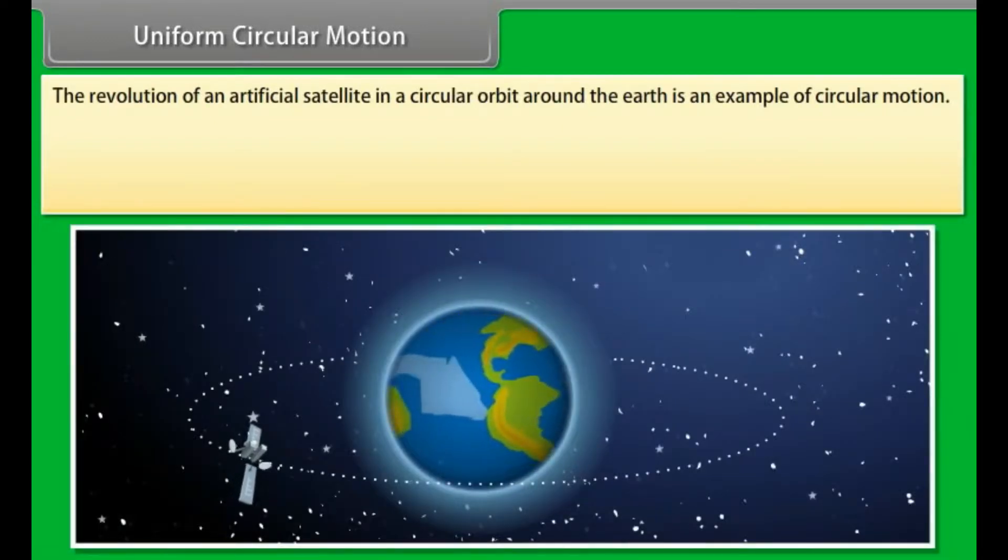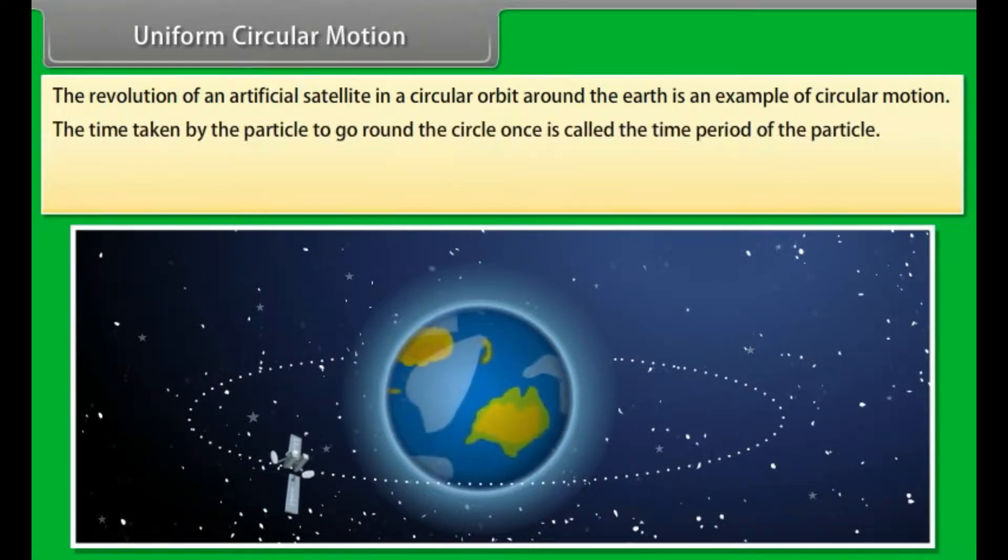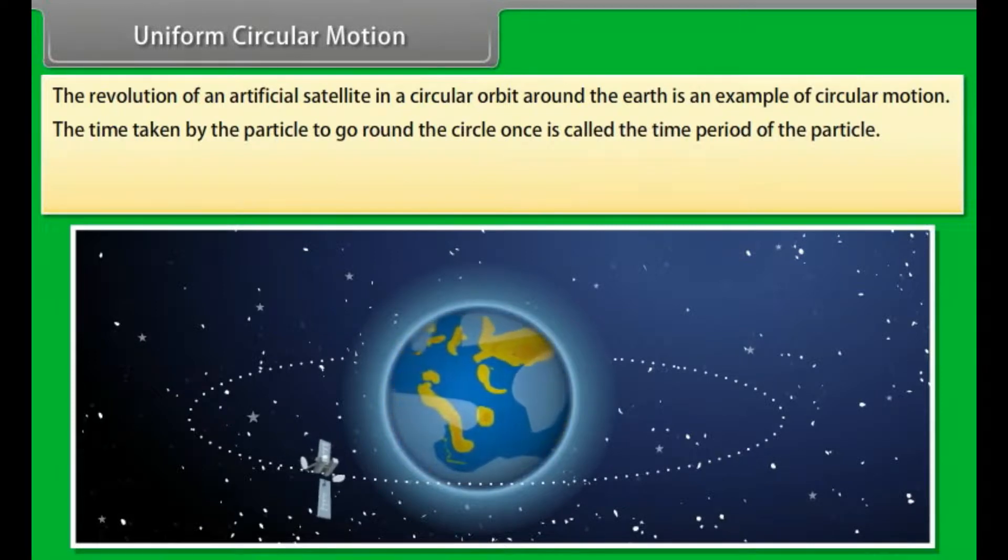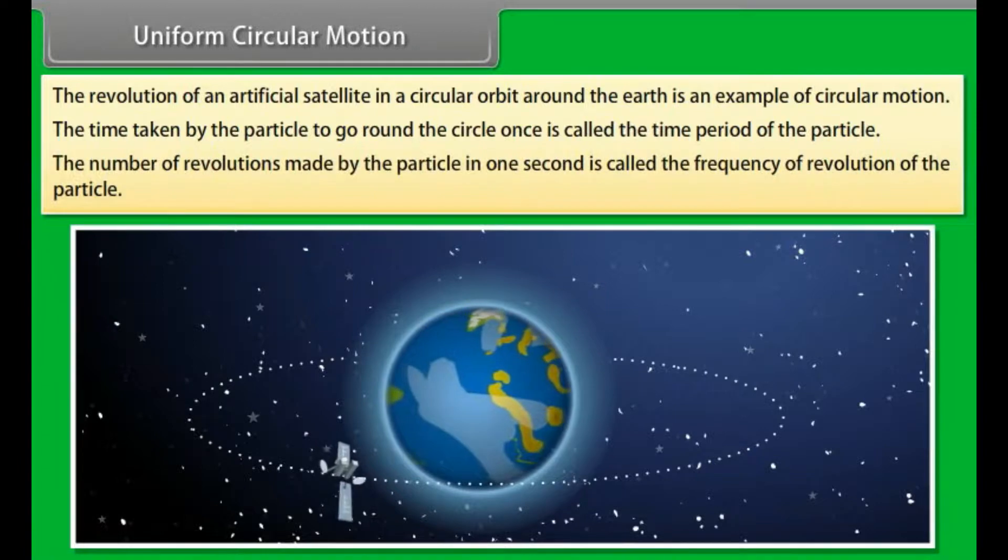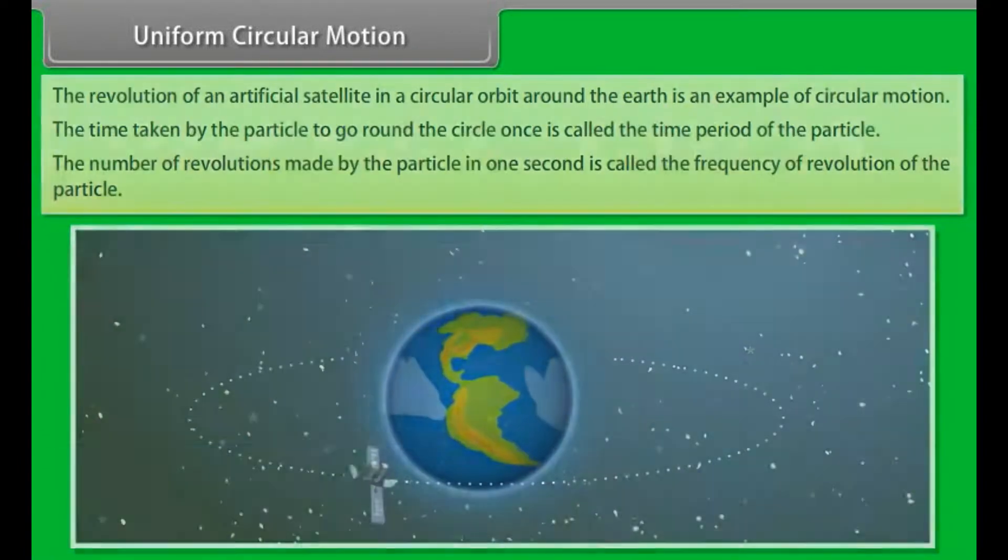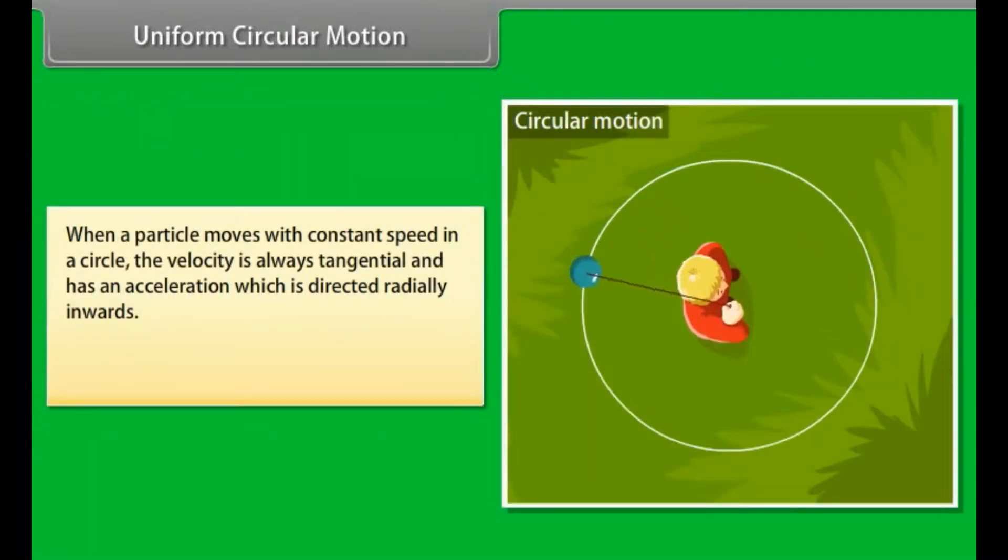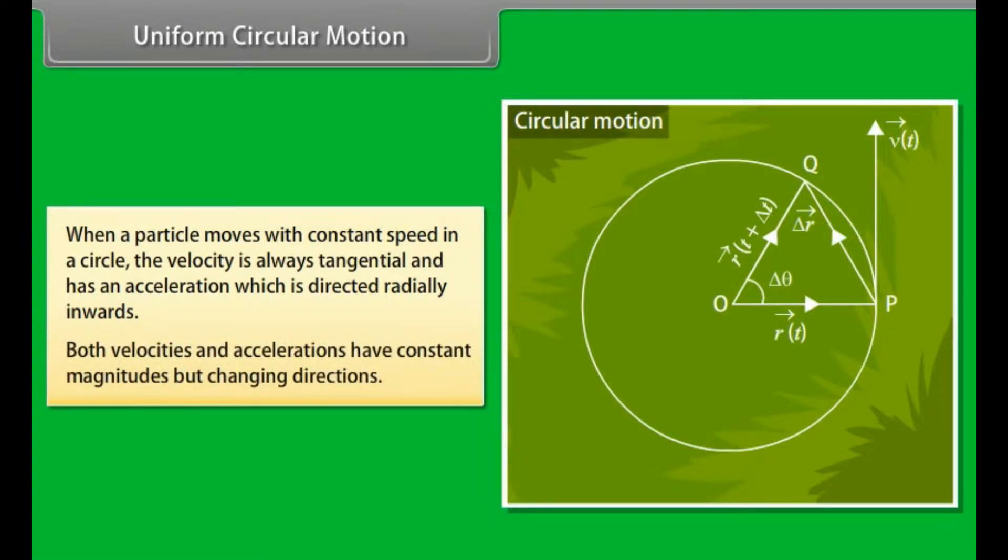Uniform circular motion. The revolution of an artificial satellite in a circular orbit around the earth is an example of circular motion. The time taken by the particle to go round the circle once is called the time period of the particle. The number of revolutions made by the particle in one second is called the frequency of revolution of the particle. When a particle moves with constant speed in a circle, the velocity is always tangential and has an acceleration which is directed radially inwards. Both velocities and accelerations have constant magnitudes but changing directions.